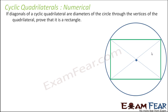The diagonals of a cyclic quadrilateral are diameters of the circle through the vertices of the quadrilateral. It is given that there is a cyclic quadrilateral ABCD and the diagonals are actually passing through the center — that is, they are diameters. We have to prove that it is a rectangle.